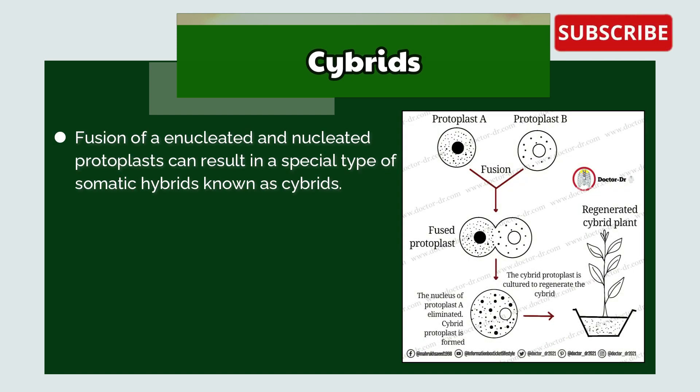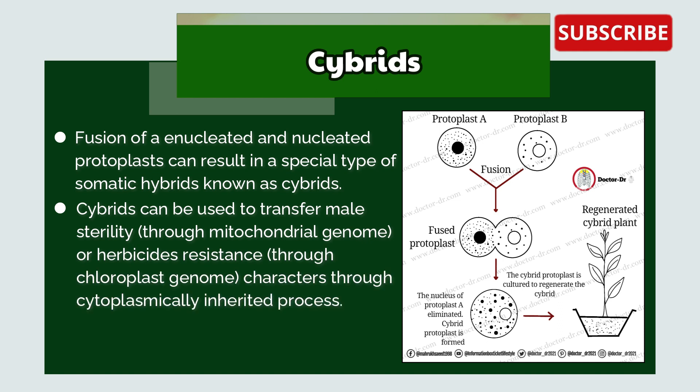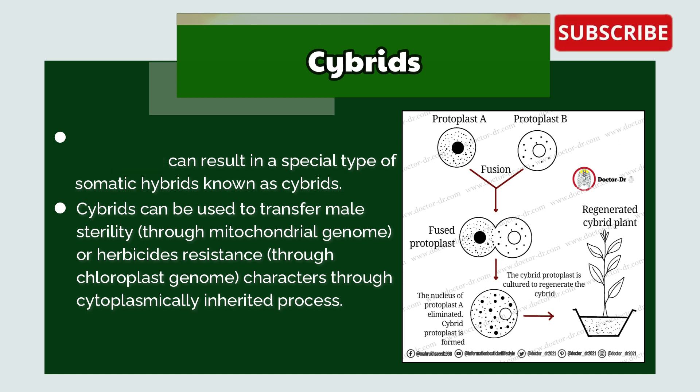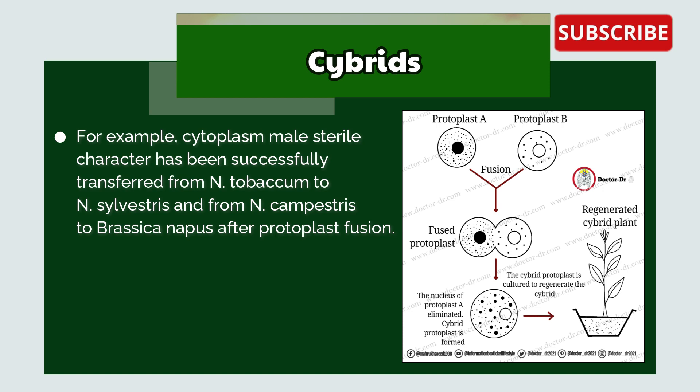Cybrids: Fusion of an enucleated and a nucleated protoplast can result in a special type of somatic hybrid called cybrids. Cybrids can be used to transfer male sterility through the mitochondrial genome or herbicide resistance through the chloroplast genome via cytoplasmically inherited processes. For example, cytoplasmic male sterility has been successfully transferred from N. tabacum to N. sylvestris and from N. compestris to Brassica napus after protoplast fusion.